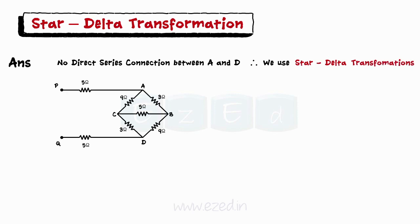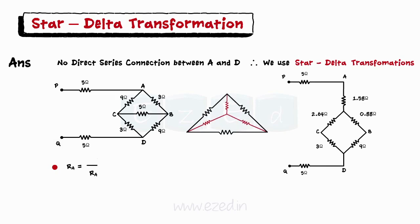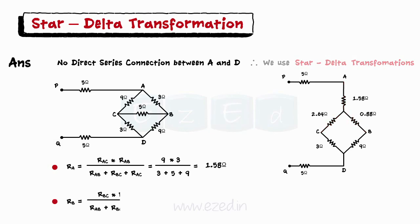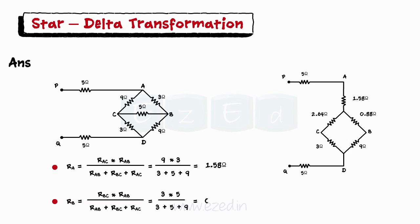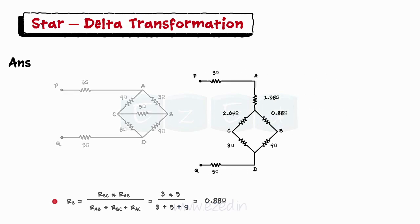Let's first convert delta of 9 ohms, 3 ohms and 5 ohms into equivalent star structure. Using the delta to star conversion formula, we get the three resistors as RA equals 1.58 ohms, RB equals 0.88 ohms and RC equals 2.64 ohms.